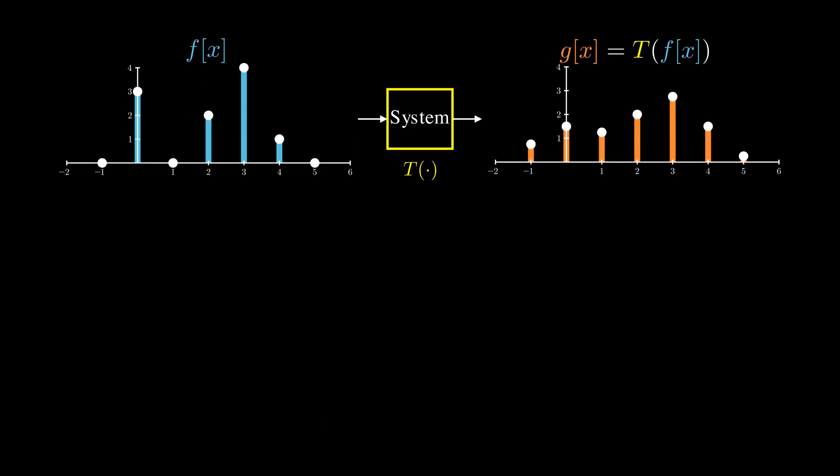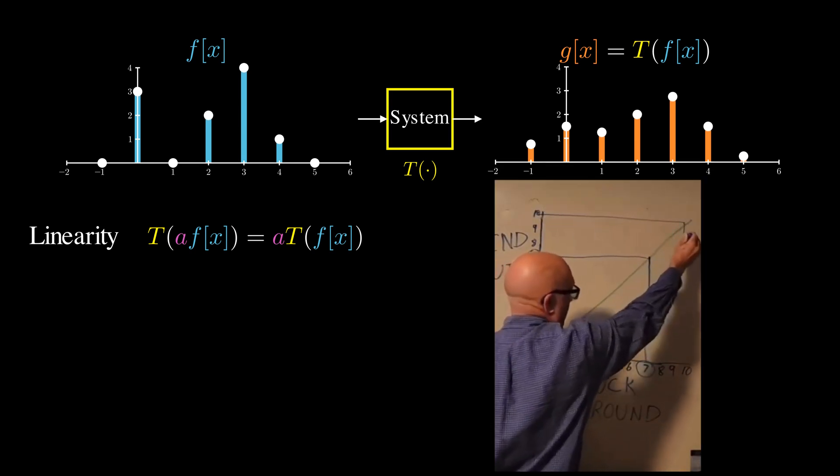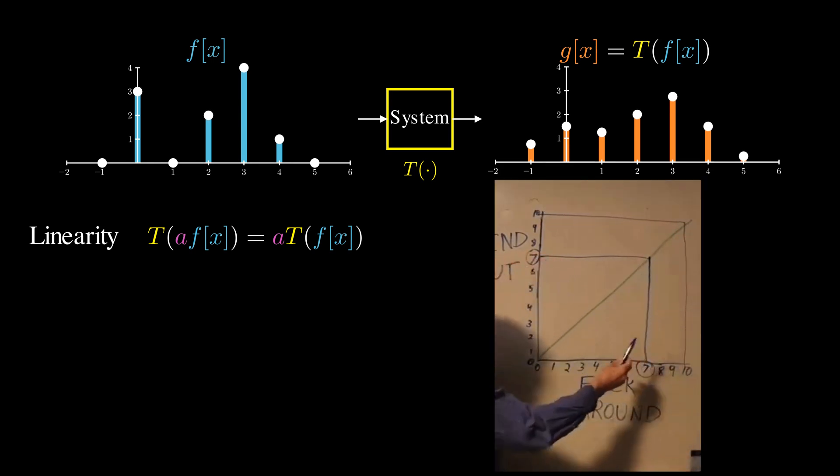Now the system we care about have two key properties. The first property is linearity. This means that scaling the input scales the output by the same factor. The more you fuck around, the more you're going to find out.